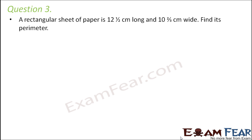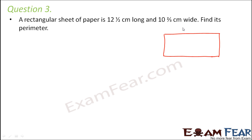Question number 3. A rectangular sheet of paper is 12½ cm long and 10⅔ cm wide. So you have a rectangular sheet of paper something like this. The length and width, which is also called the breadth, are marked.